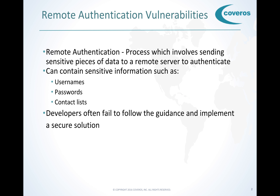Many mobile apps transmit sensitive pieces of data to servers. Some examples of such data are usernames, passwords, and contact lists. While mobile OS developers have recommendations for dealing with privacy issues regarding data during transmit, developers often fail to follow guidance and implement a secure solution. Furthermore, testers are unaware how to test for poor implementations. Let's get straight to exploiting some vulnerabilities.